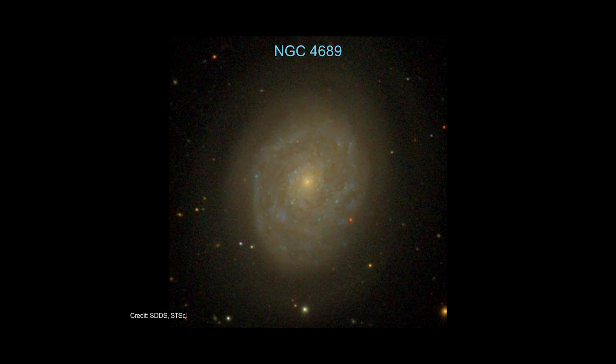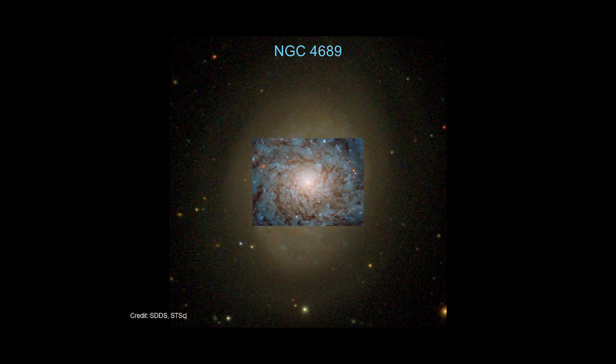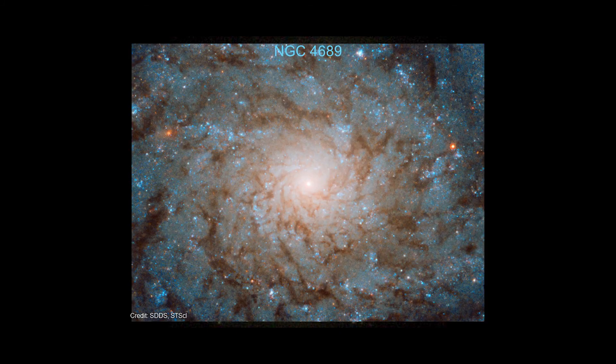Instead of being more edge-on, we're looking straight down into the disk of the plane of the galaxy. And then finally, the last one that the Hubble people released is a galaxy called NGC 4689. This is the portion of the image captured by the Hubble Space Telescope. If we zoom in, in this case this is actually a galaxy that has less star formation than normal.